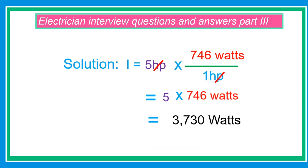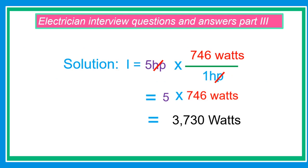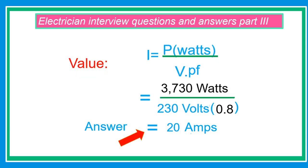Solution to the problem above. In this problem, the given is 5 horsepower, 230 volts, and 80% power factor. Solution: First, we're going to convert the 5 horsepower to watts. 5 times 746 watts equals 3,730 watts. We already converted the horsepower to watts. The answer is 3,730 watts. Now we're going to substitute: 3,730 watts divided by 230 volts times 0.8 power factor. The current is 20 amperes.